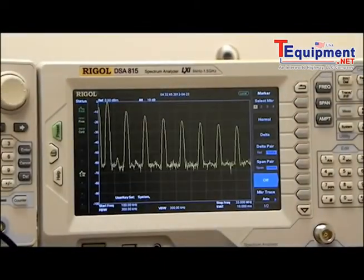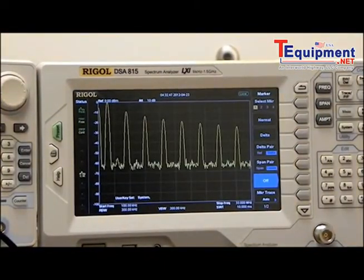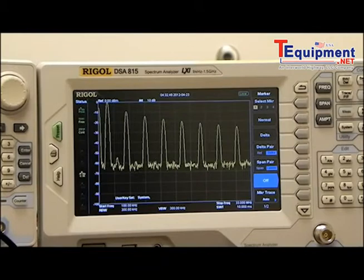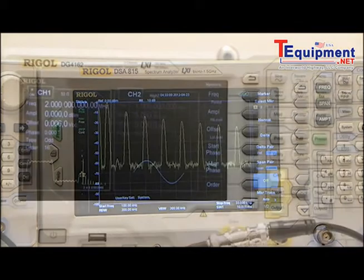Over on the right, I have also put in one of Rigol's spectrum analyzers. This one happens to be the DSA 815. And you'll see that it is showing the 1, 3, 5, 7 type of pattern that is common in a square wave.